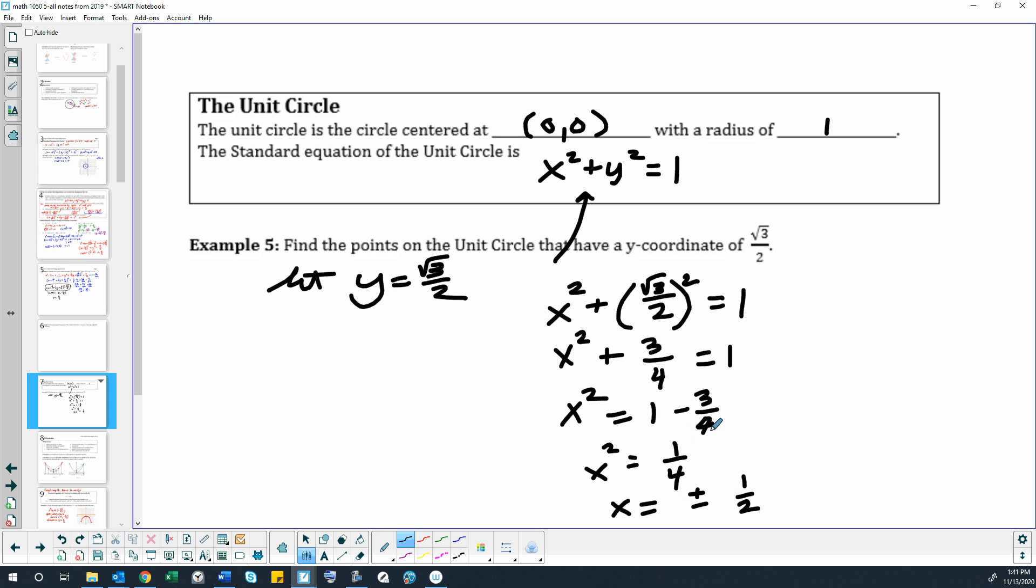Right? Because we need to take a square root, generally, unless you're finding a length, like a radius.